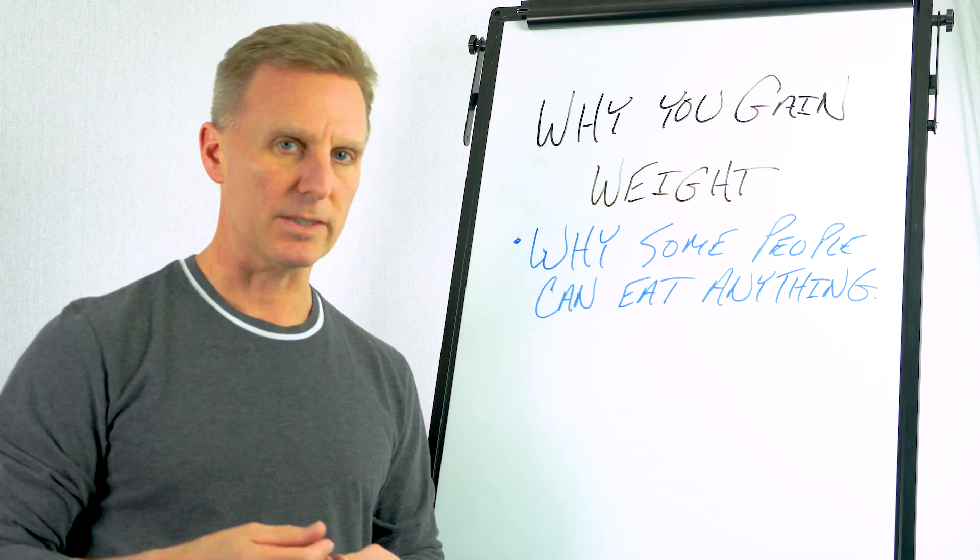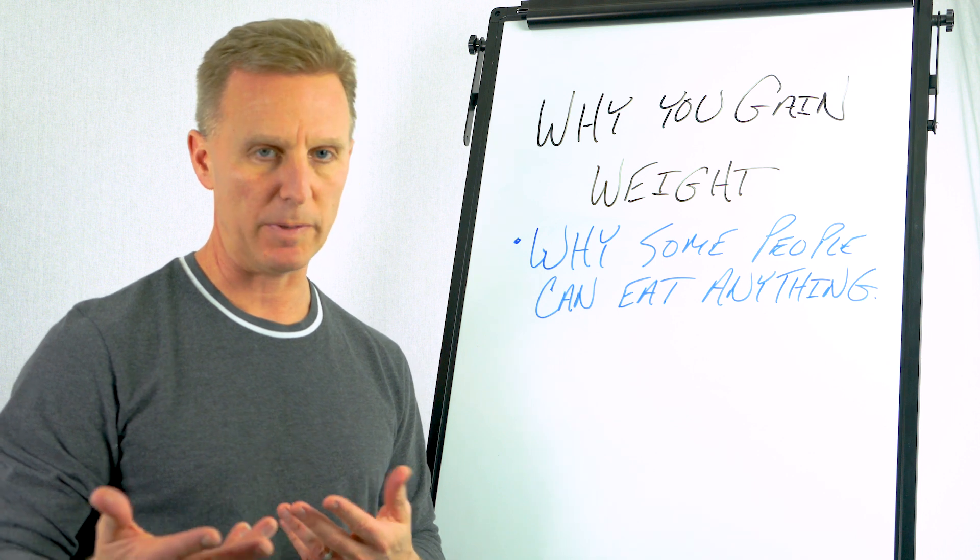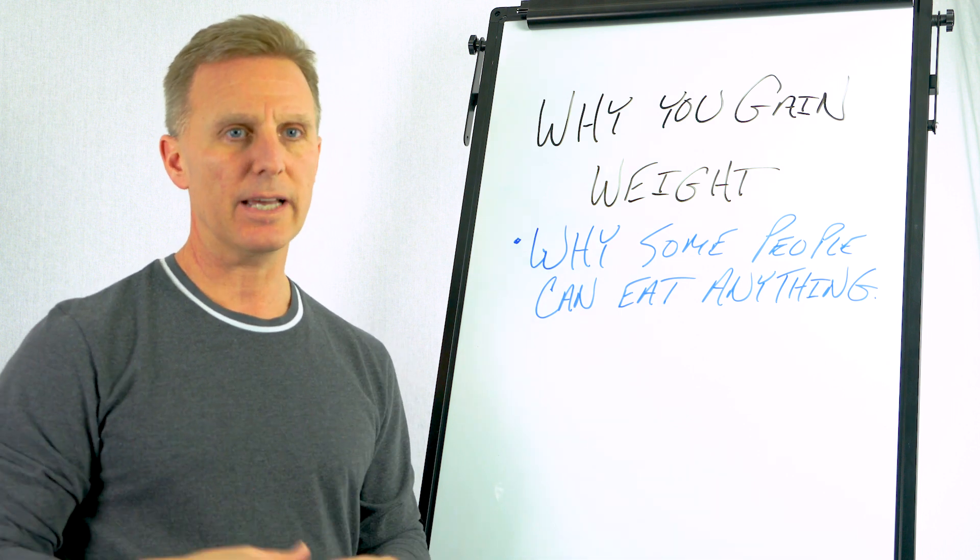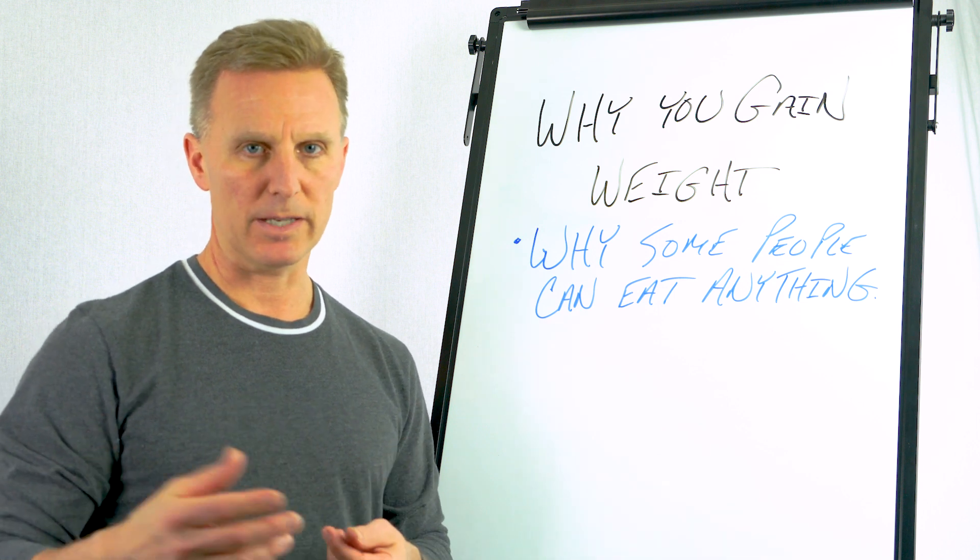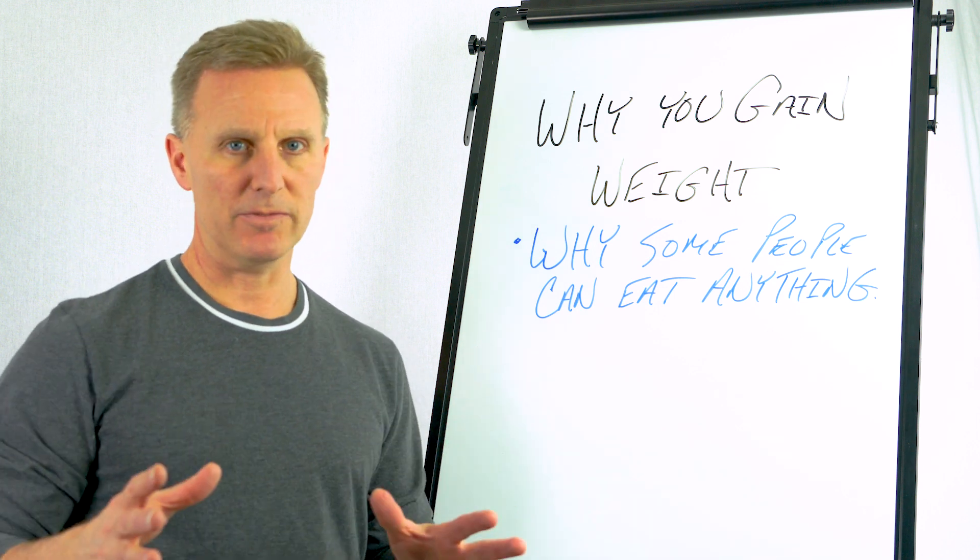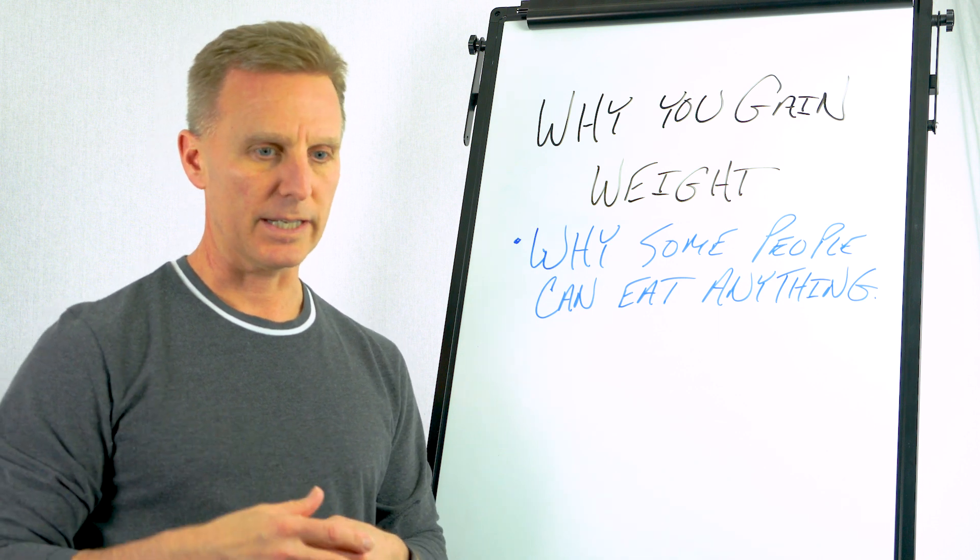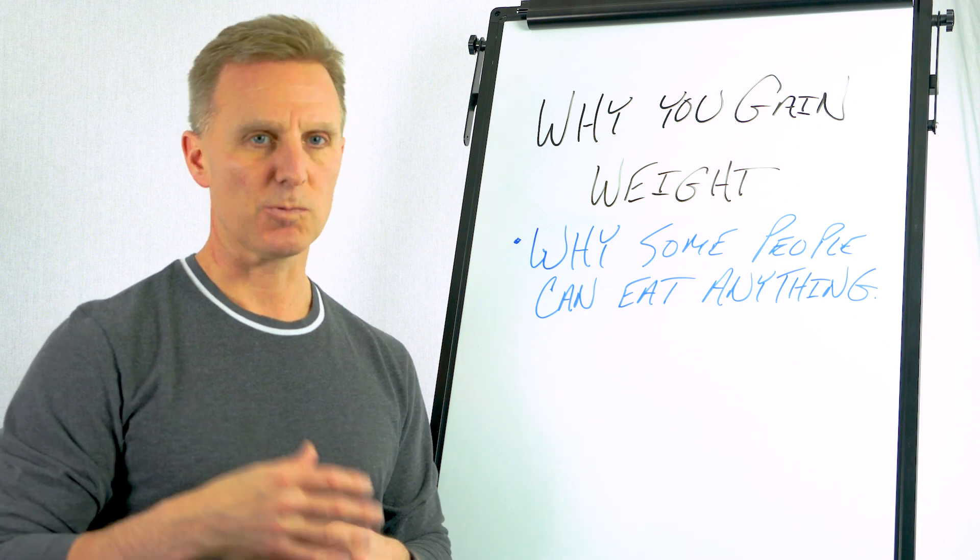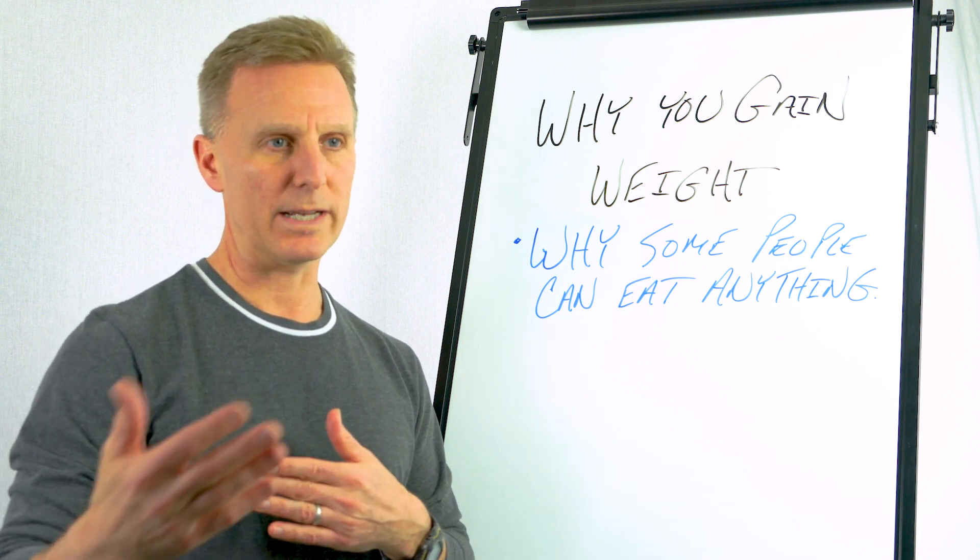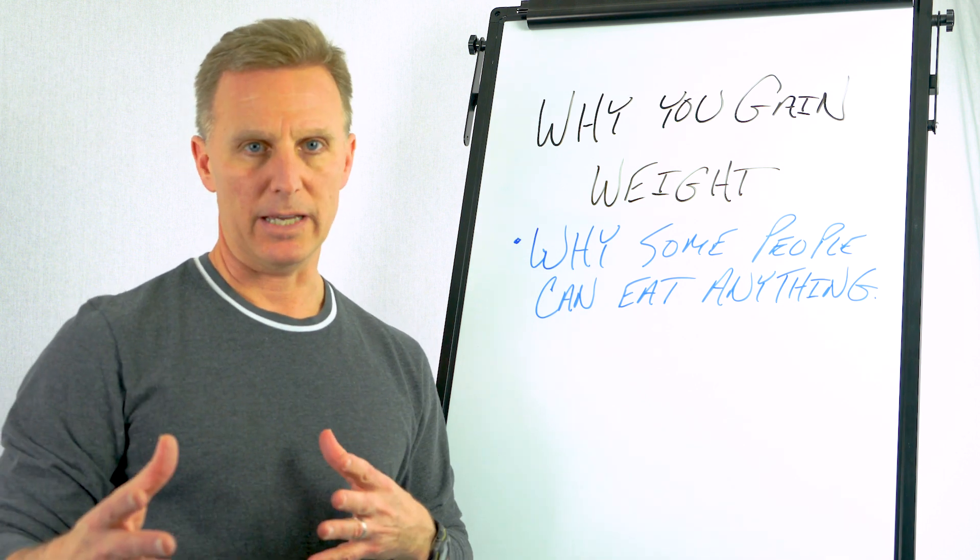And it really boils down to something called insulin, which is a hormone that you secrete from your pancreas. And to understand what's going on, we have to understand what happens with insulin. And I'm extremely visual, so I want to draw out for people what this looks like. And I think when I sort of break it down in a sort of cartoon sketch, you'll really get an understanding as to why some people can eat lots of pizza and other people can't.